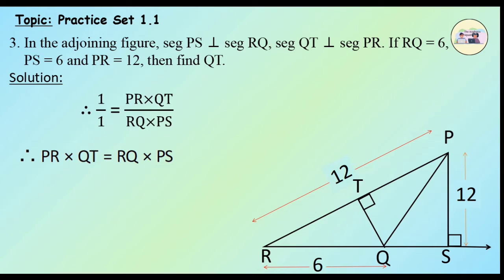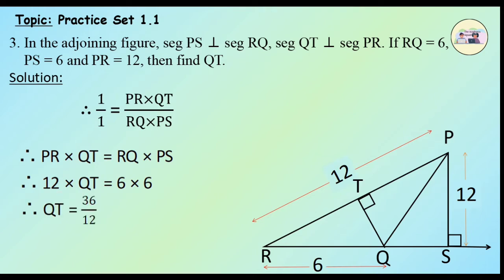Substituting the values, we get 12 × QT = 6 × 6. Therefore QT = 36/12, i.e., QT is 3 units.